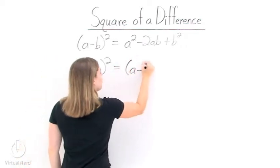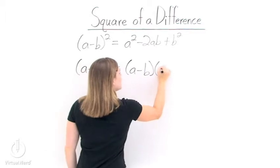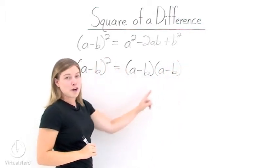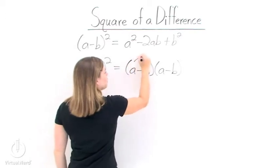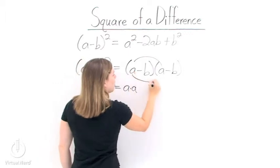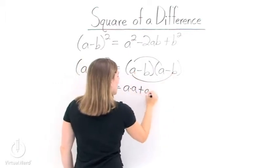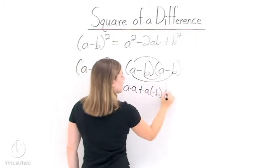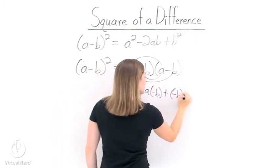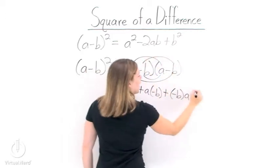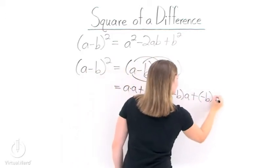So we get a minus b times a minus b. Now we need to FOIL these two binomials. So we multiply the first terms and get a times a. Then the outer terms, we have a times a negative b. Then the inner terms, we get a negative b times a. And then the last terms, a negative b times a negative b.